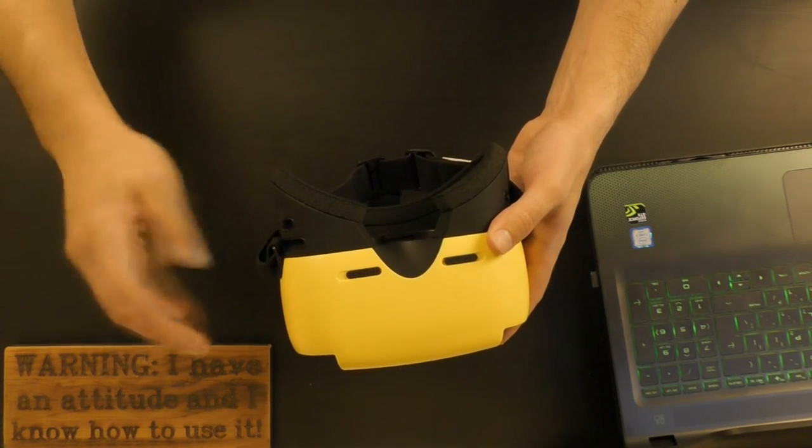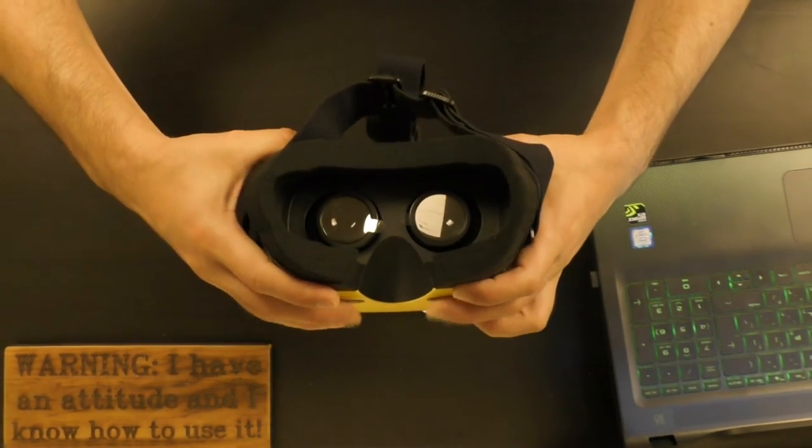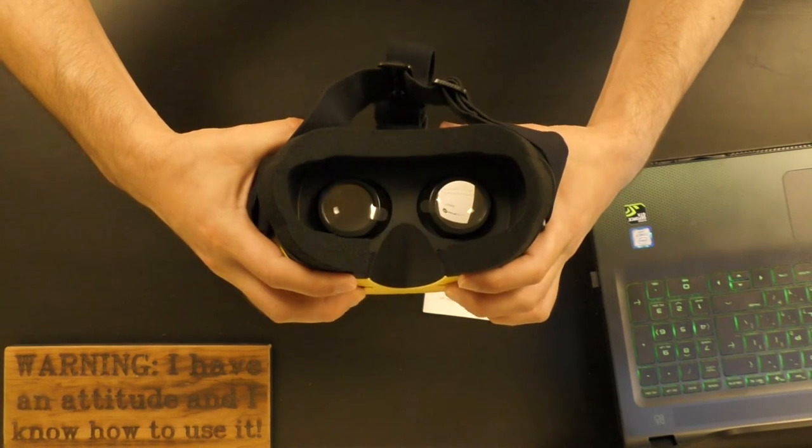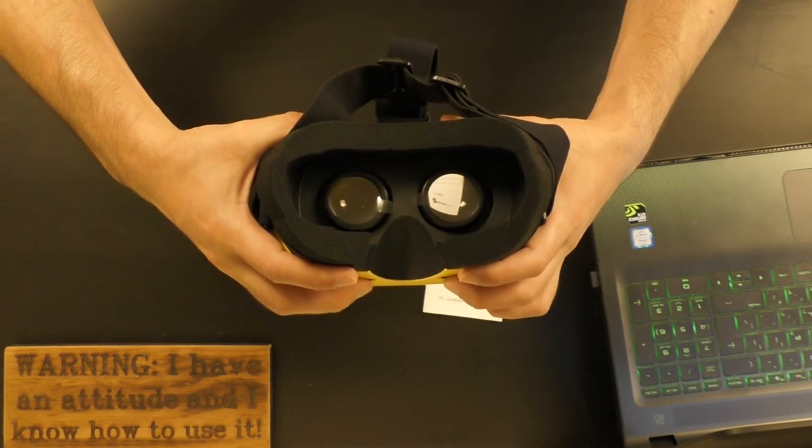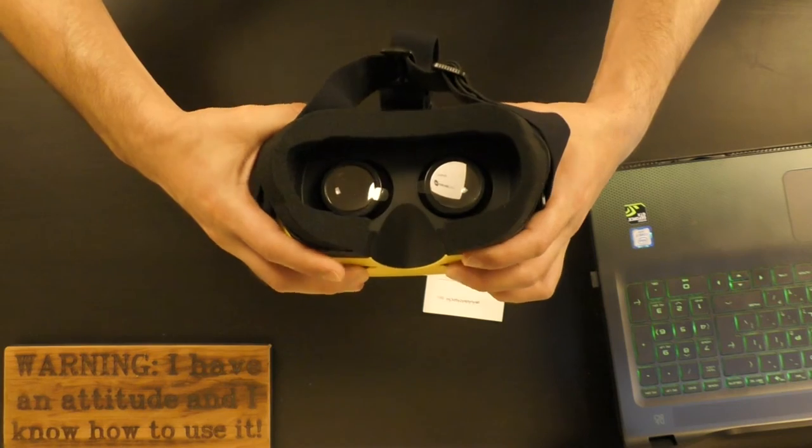On the bottom part of the Baofeng Mojing XD VR glasses, you have those two little switches which you can move from side to side. They will allow you to adjust the lenses only from side to side. You can't move the lenses inside and outside.